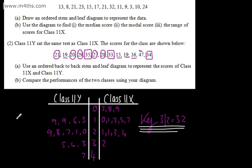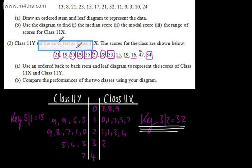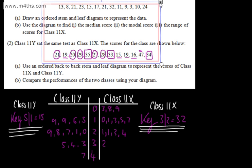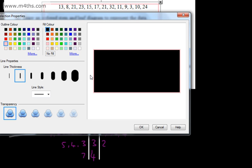I'm now going to put a key for Class 11Y — this is slightly different. Key: 5 | 1 = 15, and you might want to write 'key for Class 11Y' and 'key for Class 11X'. Notice the key reads differently — 5 | 1 is now 15, instead of 1 | 5, because we're working from the left to the right on the Class 11Y side.